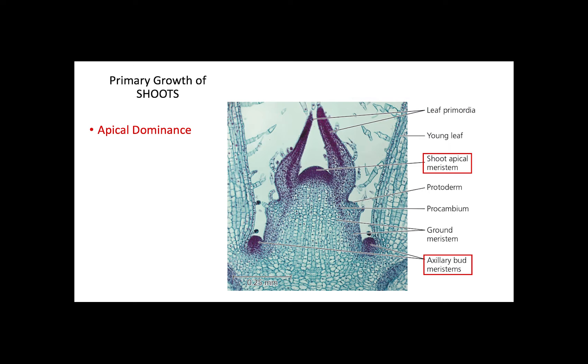As with roots, we can also identify the protoderm, the ground, and procambium meristems in shoots. Finally, the leaf primordia is where new leaves are formed.